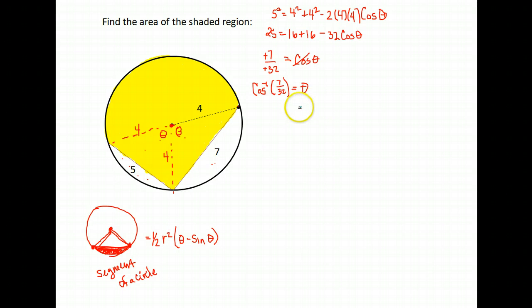When we do the inverse cosine, make sure your calculator is in radian mode, because remember that all of these formulas we're using are in radians. So you either have to use it in radian mode or convert after you're done. Okay, so our theta is 1.35.